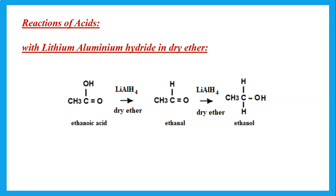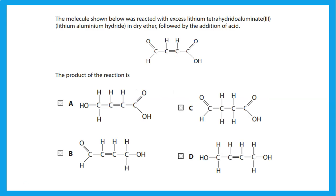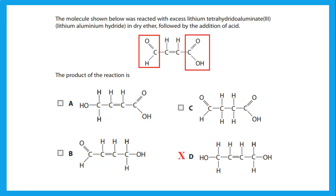Acids react with lithium aluminium hydride in dry ether. If the product is immediately distilled off, we get an aldehyde. If left in the lithium aluminium hydride with dry ether, we eventually reduce it to an alcohol. Note that lithium aluminium hydride does not react with a C=C double bond, so the double bond remains after reduction.